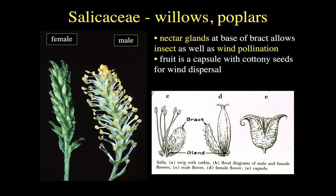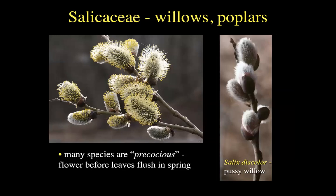Here are nectar glands — tiny little things at the base of the bracts of the ament of a male or even on a female flower in various willows. The fruit type is a capsule — dry and dehiscent — and then cottony seeds for wind dispersal, as we'll see particularly in the true cottonwoods. Many species of Salix are precocious, meaning they complete their entire sexual phase of flowering and pollination prior to flushing out leaves in spring. Some of the earliest signs of spring are pussy willows — the aments, also known as catkins — of these willow species.